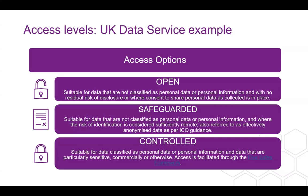For data where steps need to be taken so that the risk of re-identification is unlikely — what the ICO would class as effectively anonymized — that would fall under our safeguarded option. The safeguarded option puts in place a legally binding end user license agreement between the service and the user, ensuring that data is legally and ethically shared and that secondary researchers understand their responsibility. The controlled option, for any data considered sensitive or personal, requires you to apply for access through our five safes framework in a secure environment, with all outputs double-checked to ensure no identifiable information is released.